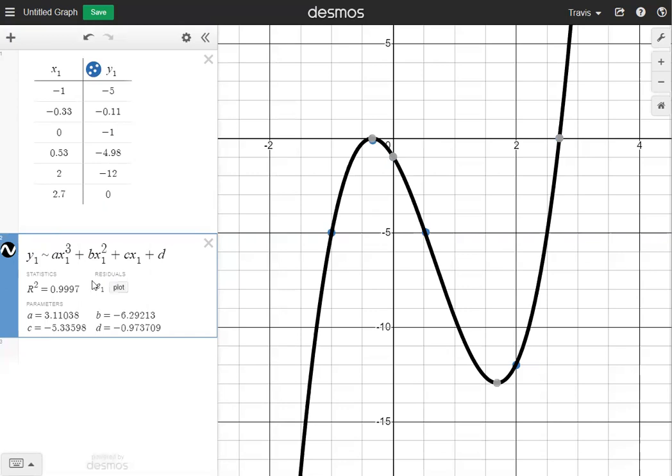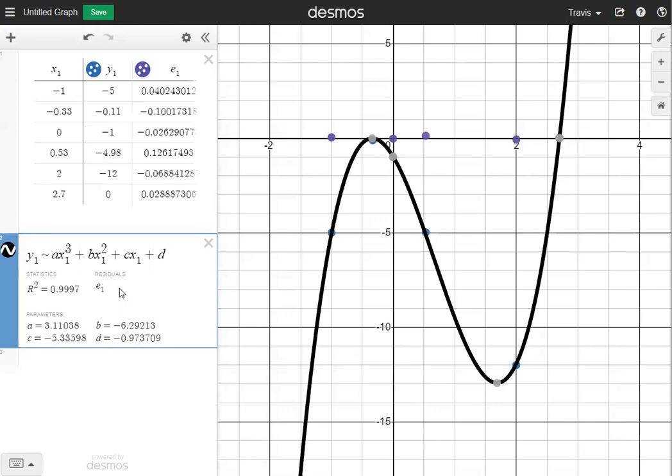The next thing I'm going to do is under residuals, you'll see e1. And I want to plot my error terms. So I'm going to hit the plot button. And then my error terms are going to show up as purple dots near the x-axis. And the bigger the error terms, that means the farther the point is away from our black regression curve.